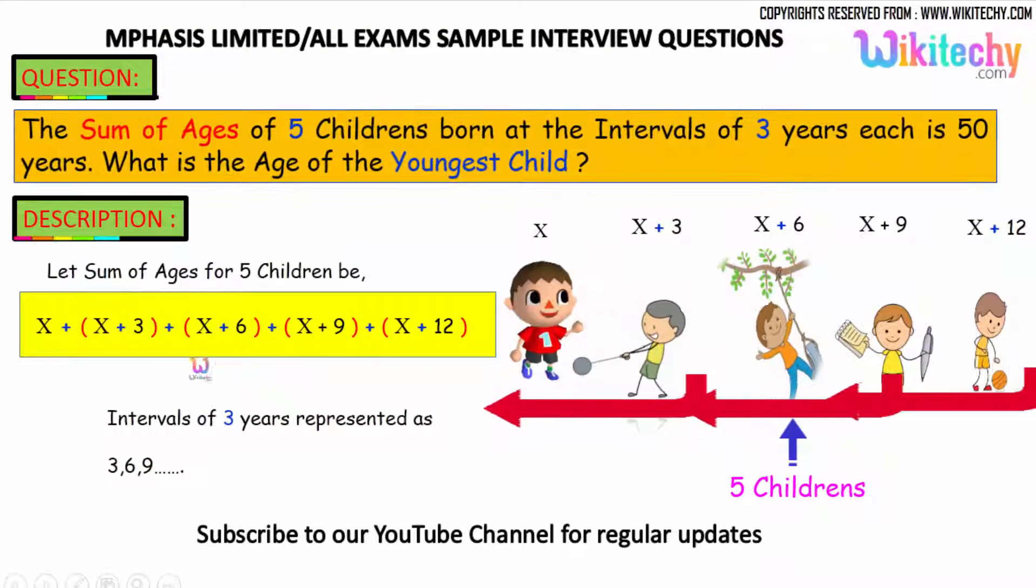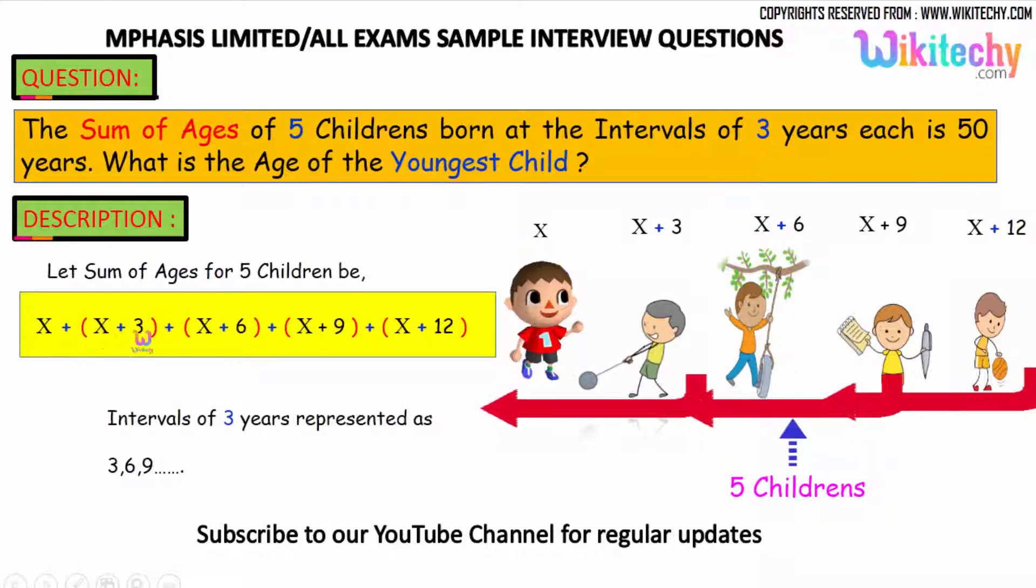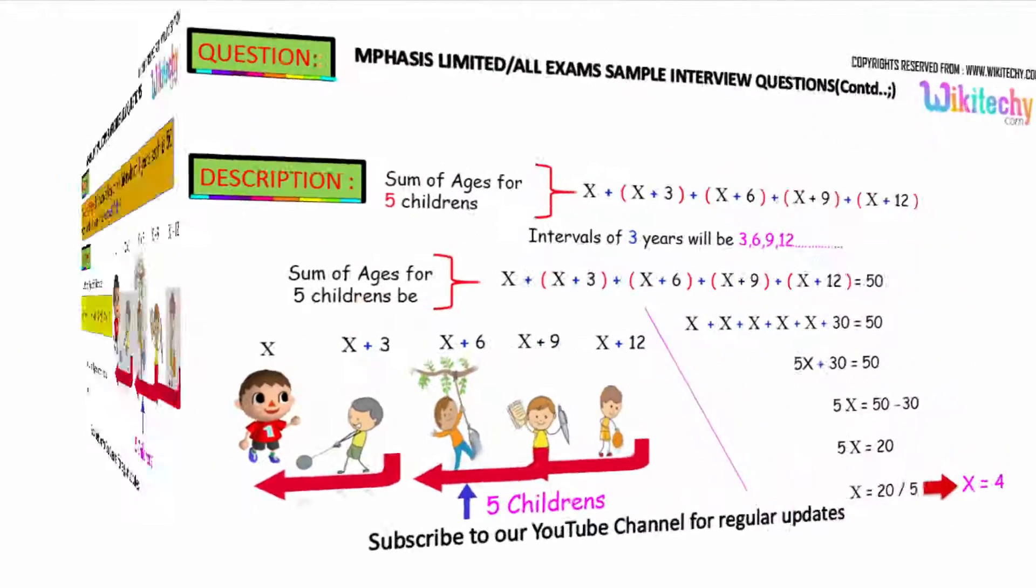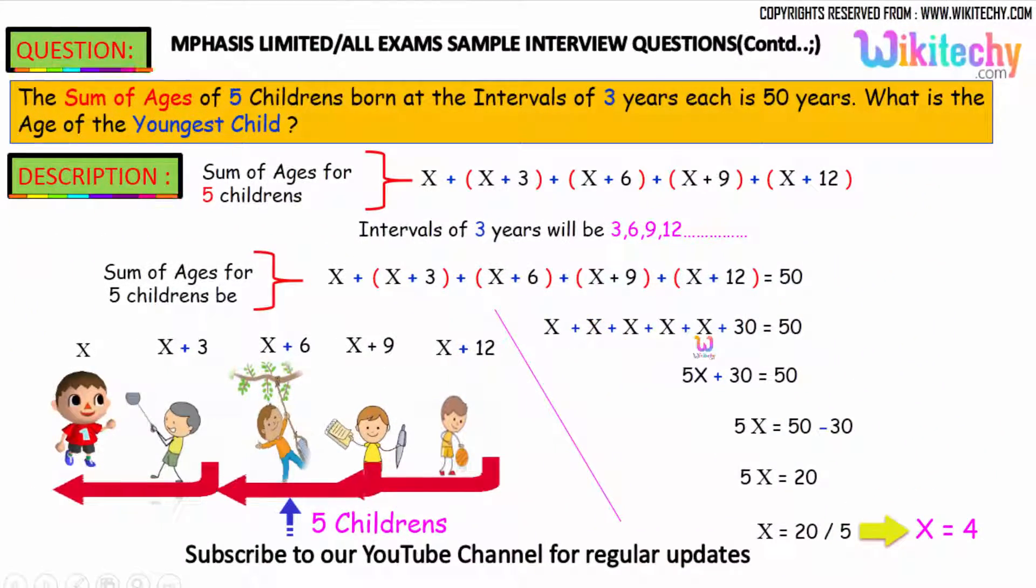So that's the question. So adding all the sum x, x plus 3, x plus 6, x plus 9, x plus 12 is equal to 50. So you got 5x plus 30 is equal to 50.